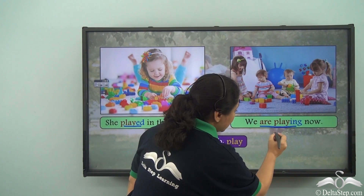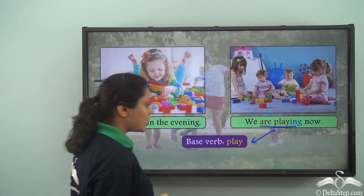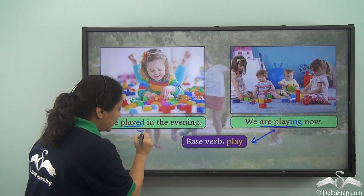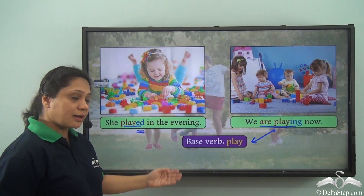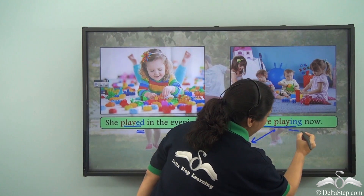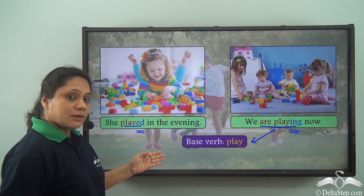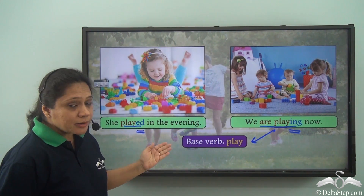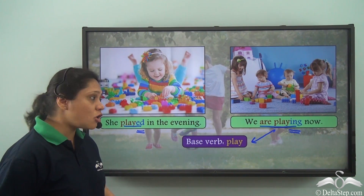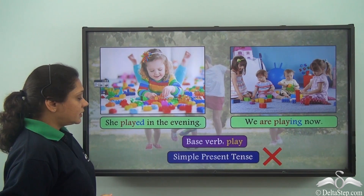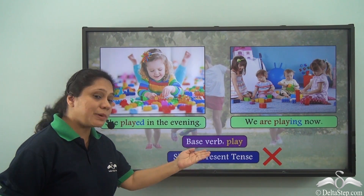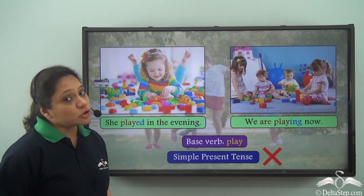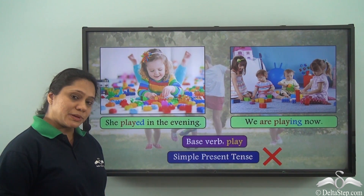Played is the ed form of the base verb play, and are playing is the ing form of play. So these are not the singular form or the plural form of the base verb in simple present tense. So both these sentences are not in the simple present tense.